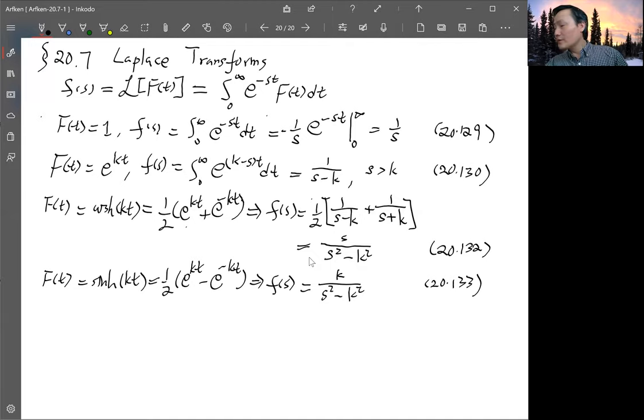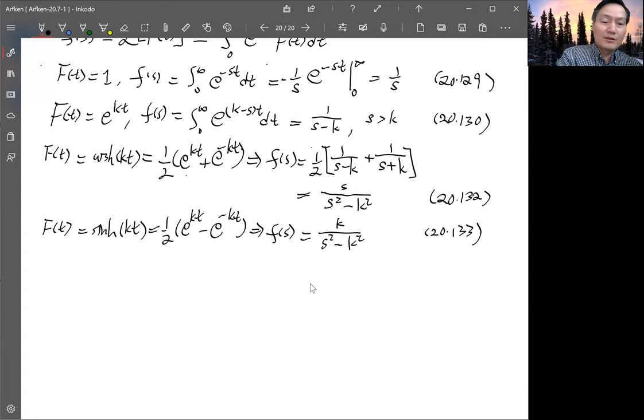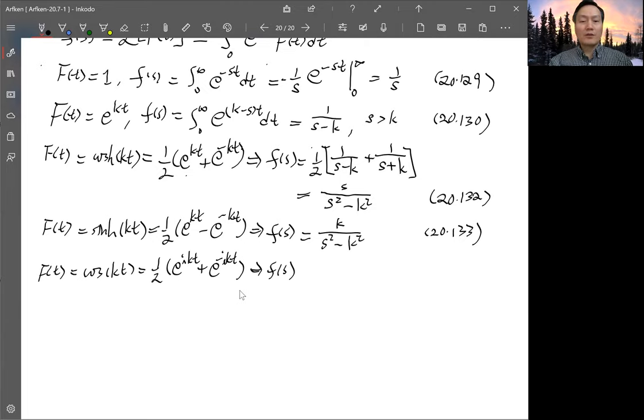Similarly for sine and cosine, we're going to do the same thing. F(t) equals cosine(kt), by definition is one half (e^(ikt) + e^(-ikt)). So this result is basically with k changed to ik. And what you need to change is minus k^2 to plus k^2, so you get s/(s^2 + k^2). This is equation 20.134.